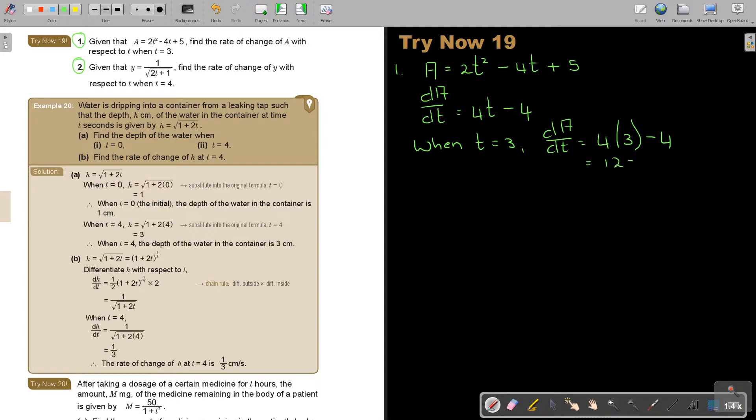And that will be 12 minus 4, and that will just give me a rate of change of 8. That's number 1. Let's do number 2.